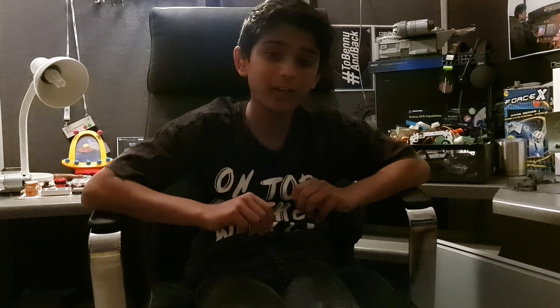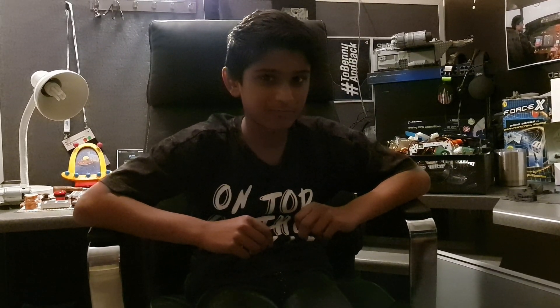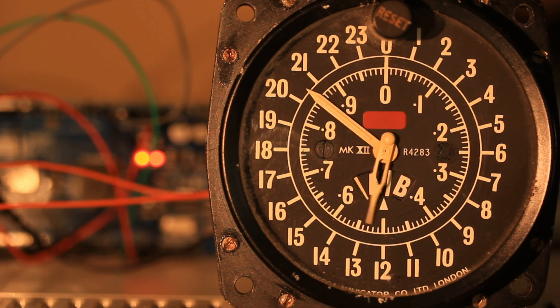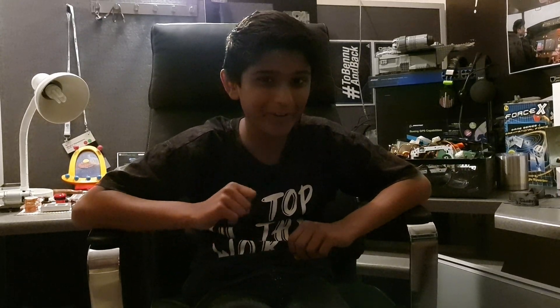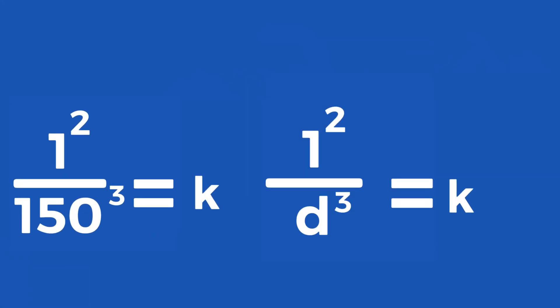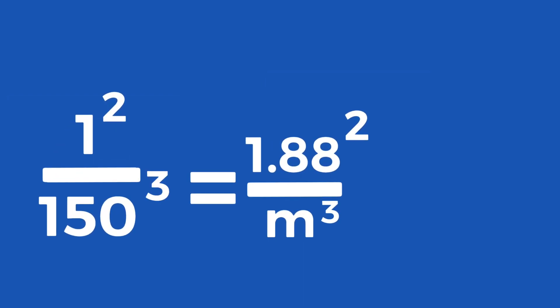The next job is to see how long it takes Mars to go around the sun. You should get 1.88 years. Now here's the really cool bit: as both versions of the equations equal k, we can get rid of the k and we get this — 1 squared divided by 150 cubed equals 1.88 squared divided by m cubed.